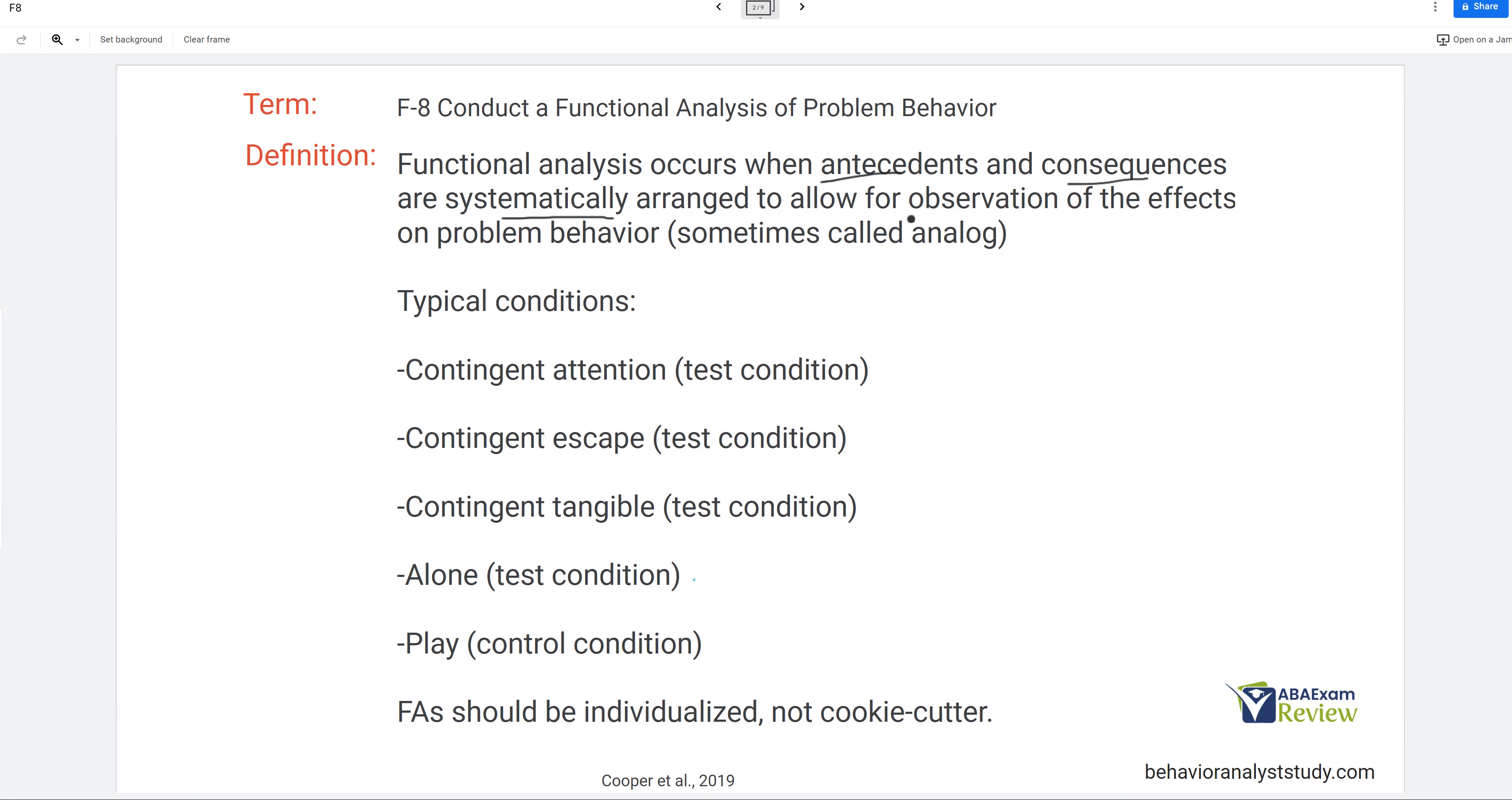So this is sometimes called analog. This is just an aside for you to be aware of. Typical conditions. And you'll notice our typical conditions simply follow our functions. So if you know the functions you can do an FA. We have contingent attention, which is a test condition, contingent escape, contingent tangible, alone, and then play, which is our control condition. And we're going to go through each and you'll see why play is considered control while these other four we're testing to see does the behavior function for one of these, for two of these, or for multiple. FAs should be individualized, not cookie cutter.